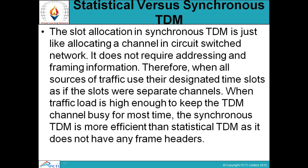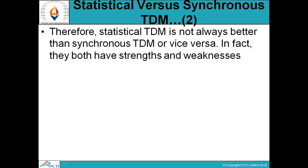When traffic load is high enough to keep the TDM channel busy most of the time, synchronous TDM is more efficient than statistical TDM, as it does not have any frame headers to handle. Therefore, statistical TDM is not always better than synchronous TDM and vice versa — in fact, they both have strengths and weaknesses — statistical और synchronous TDM दोनों के कुछ features होते हैं और कुछ weaknesses होती हैं।